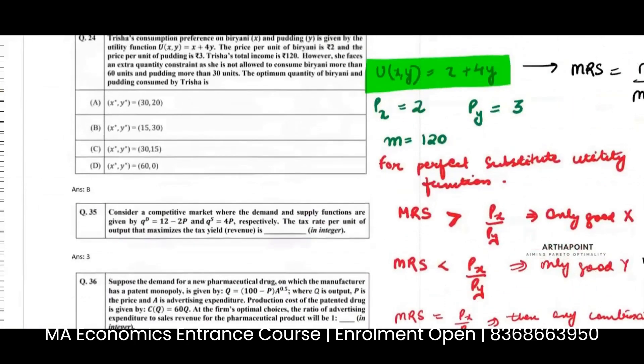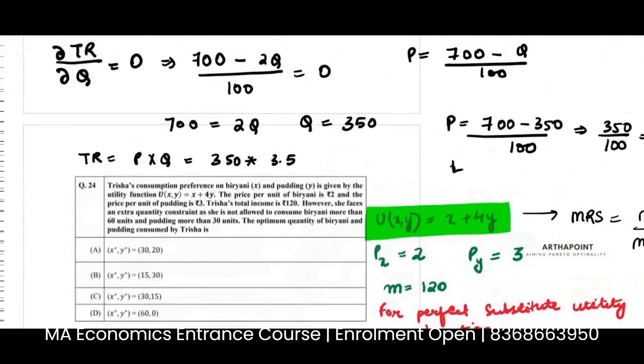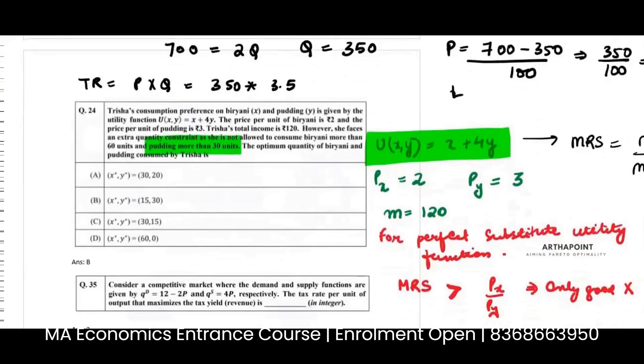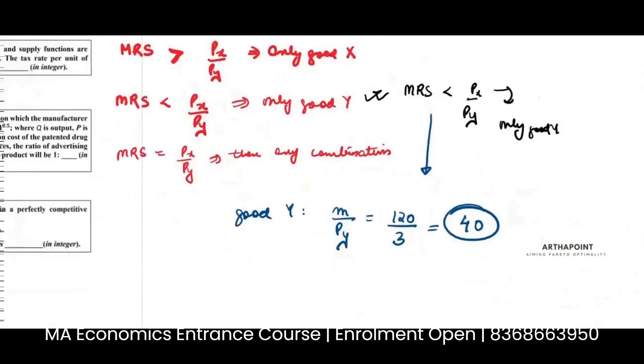Now, just look here. This question says you cannot consume more than 30 units. There is this extra constraint that you have. So therefore, because I cannot consume more than 30 units, the maximum that I can do for good Y is consume 30 units, not 40 units. So I will say that because of additional constraint, given consumption of good Y can only be 30 units.